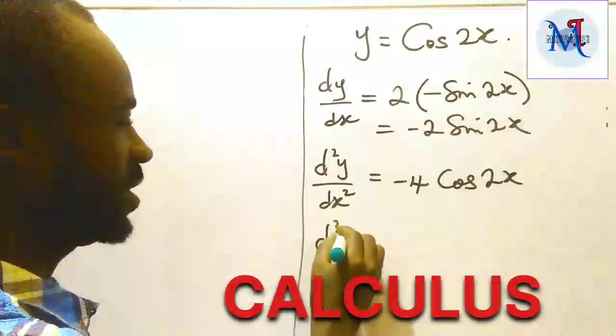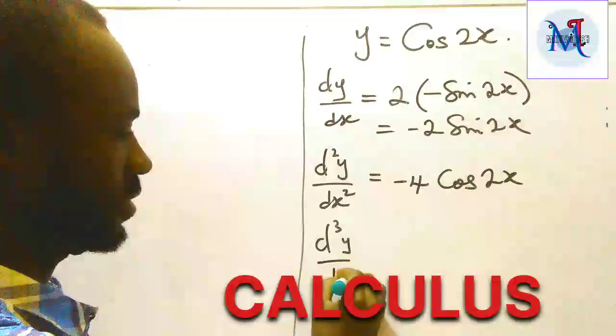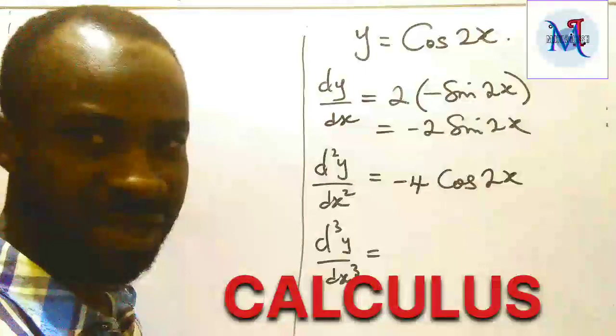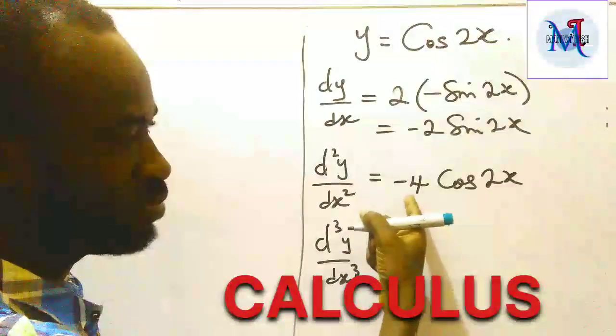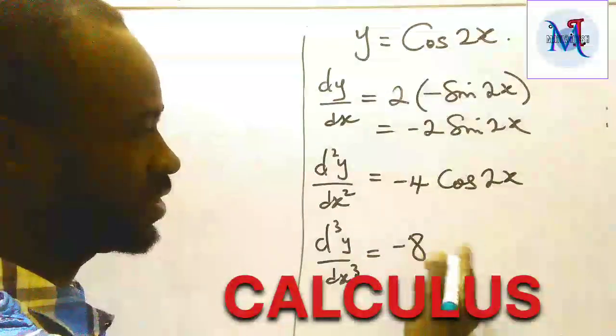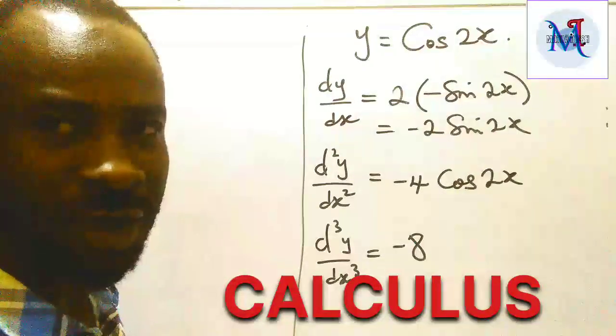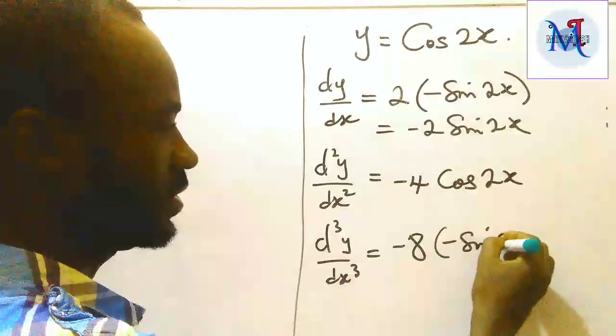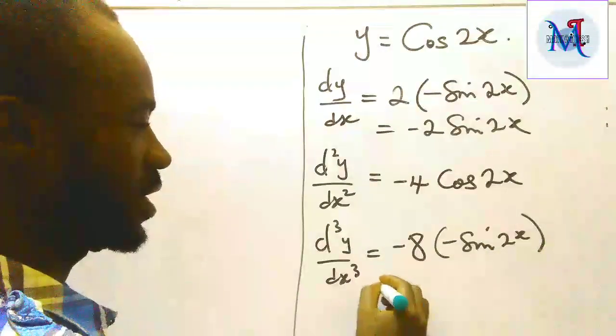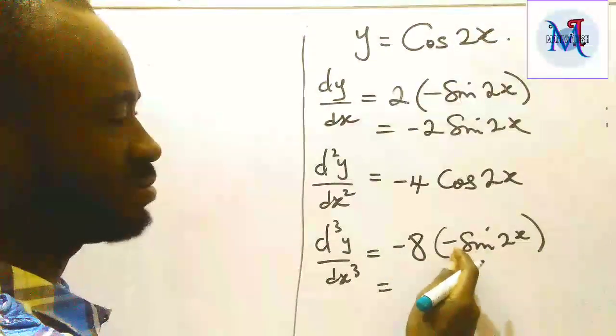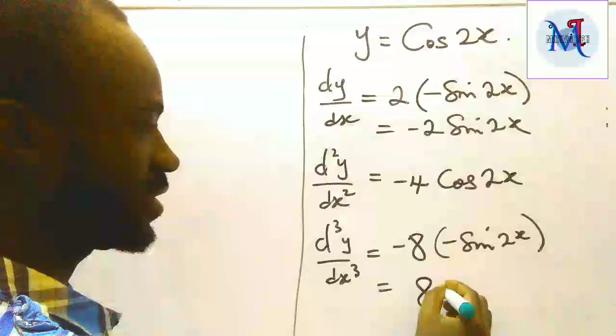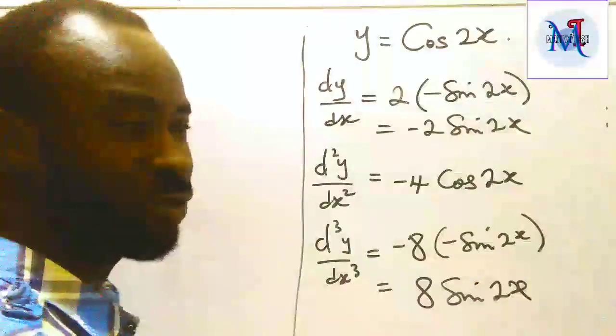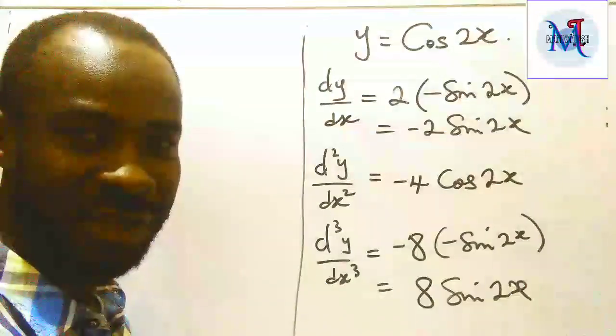For the third derivative, differentiate 2x to get 2. Two times -4 gives us -8. Differentiate cosine, which gives -sine 2x. Negative times negative gives positive. So our answer is d³y/dx³ = 8 sin 2x. Thanks for watching.